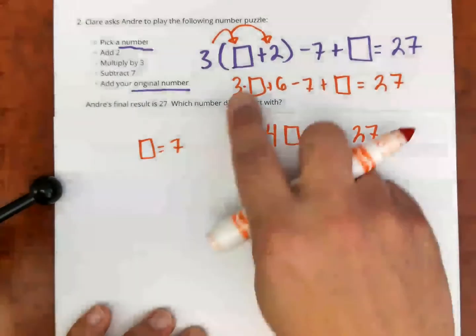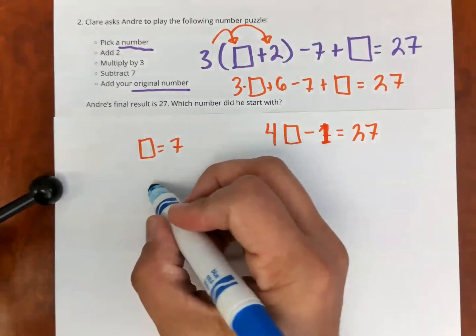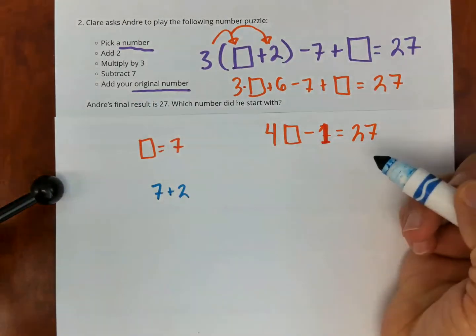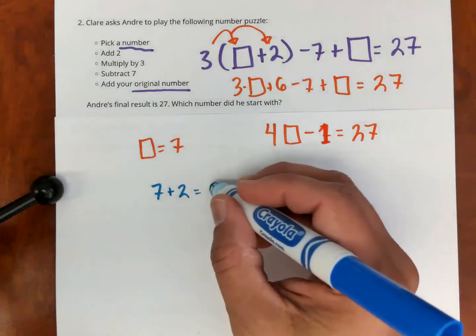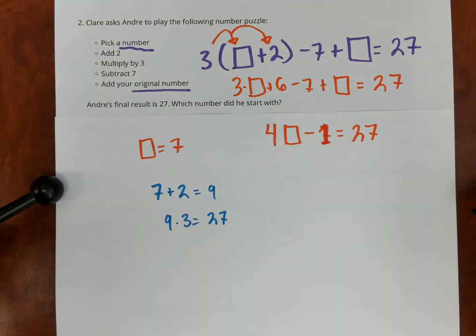Okay, now if I go back into the original number puzzle and I check, I'm going to do that here next. Okay, so I'm going to take my original number, seven, add two, that's nine, then multiply by three, that's 27,